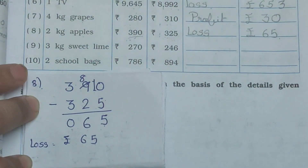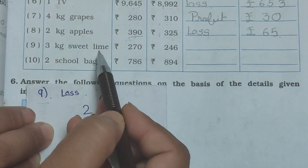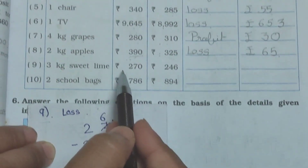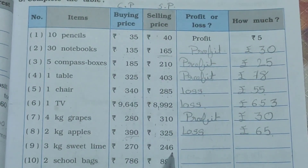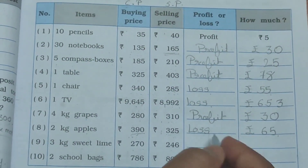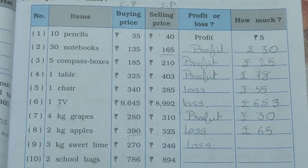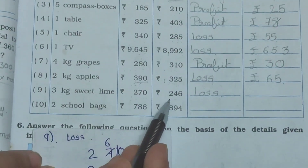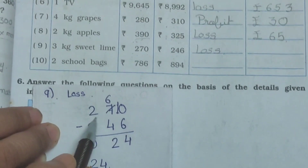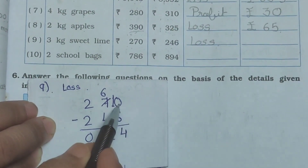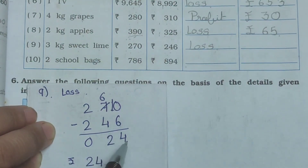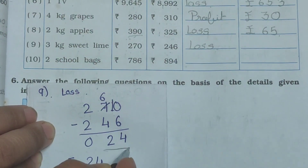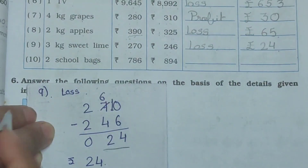Now see the 9th one. Item is 3 kg sweet. Buying price, cost price, Cp is Rs.270. Selling price is Rs.246. Again Sp is smaller than Cp, so again we get the loss. Write down loss. 270 minus 246: 0 minus 6 not possible, borrow from 7 — becomes 6 and 10. 10 minus 6 = 4. 6 minus 4 = 2. 2 minus 2 = 0. Your answer is Rs.24 of loss.